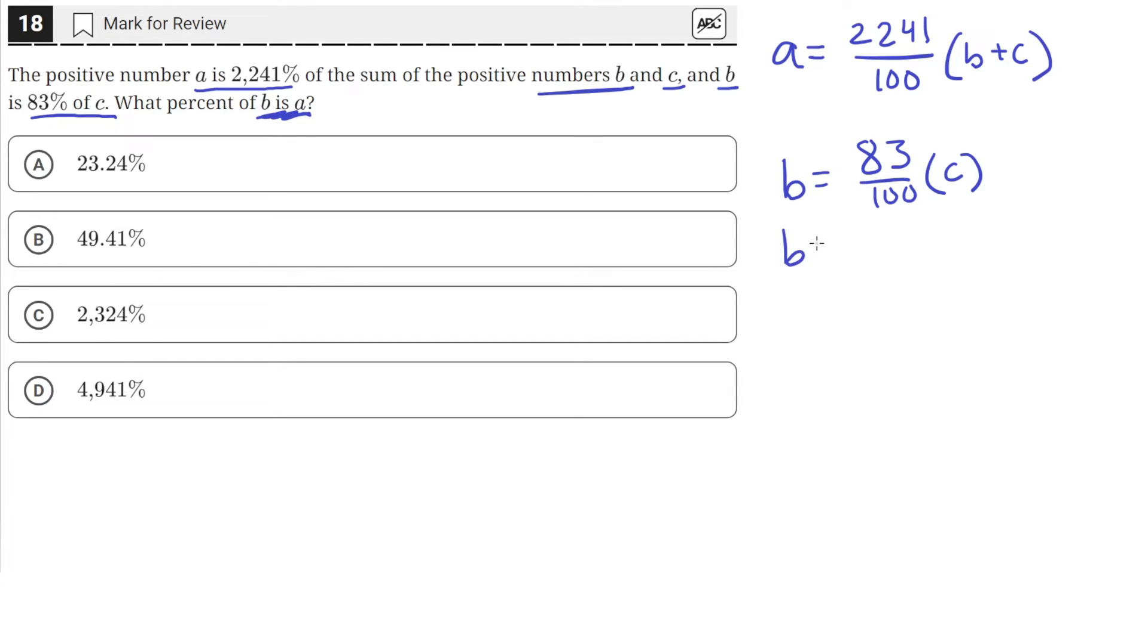Okay, so we can just rewrite the second equation to just 0.83 times C. And then we can divide both sides by 0.83. So we'll get C equals B over 0.83. So now let's plug that into the first equation. So now we're going to be using the first equation, which says that A is equal to, we can just simplify this to 22.41 times B plus B over 0.83.